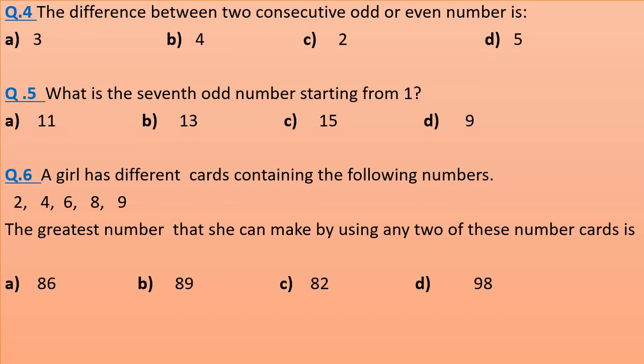What is the seventh odd number starting from 1? What is the seventh odd number starting from 1? 11, 13, 15, or 9?